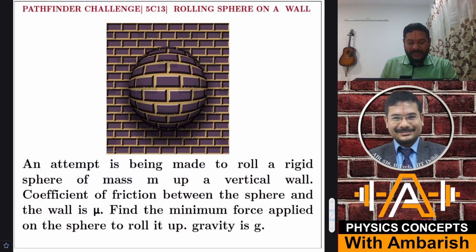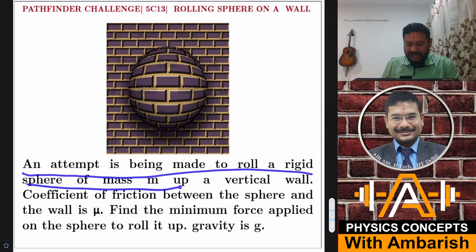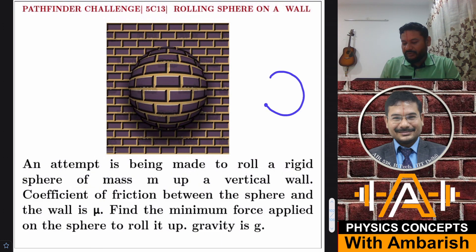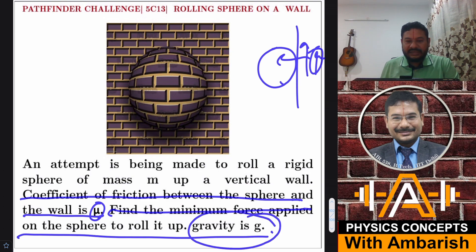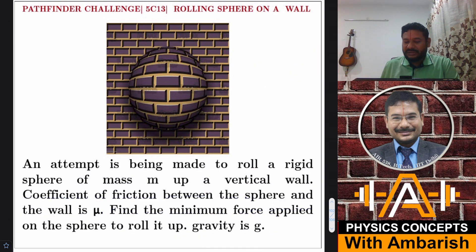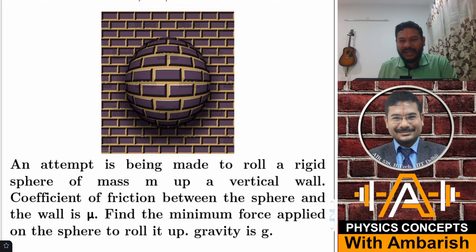So here's the problem. An attempt is being made to roll a rigid sphere of mass M up a vertical wall. So we're trying to roll this up on the vertical wall. In the side view, we are applying some force so that it rolls up the wall. Coefficient of friction between the sphere and the wall is μ. Find the minimum force applied on the sphere to roll it up. Gravity, that is acceleration due to gravity, is given as g. If you want, you can give it a try and I'll get into my analysis right away.